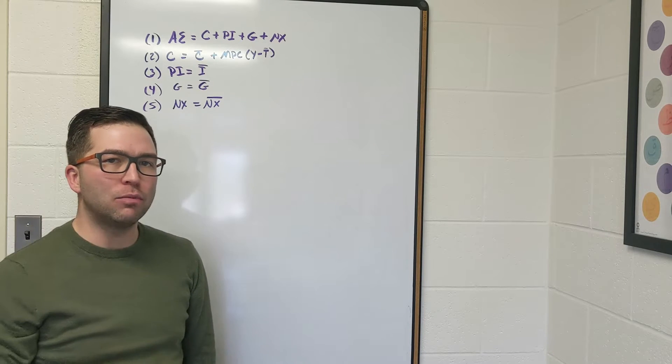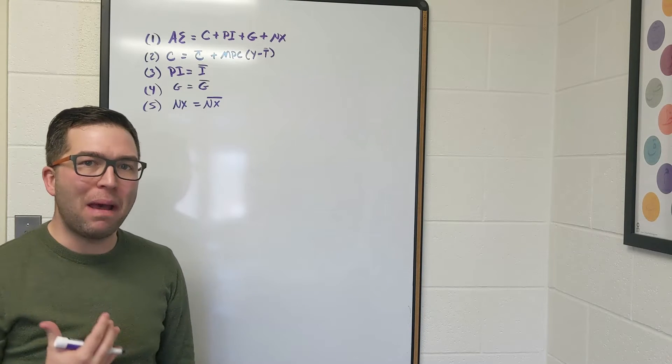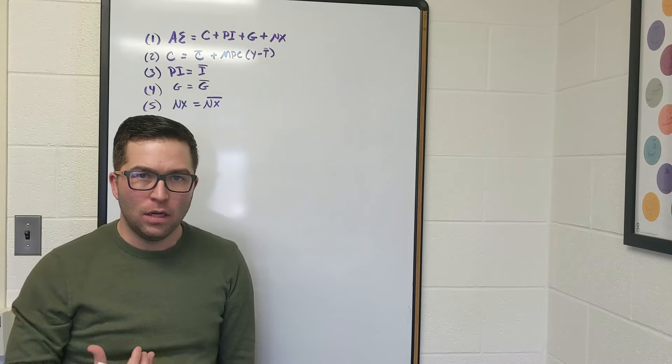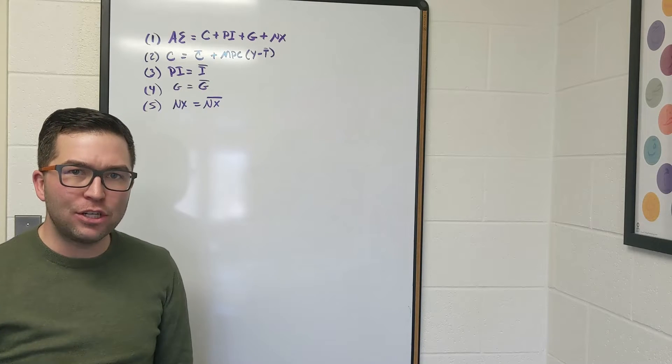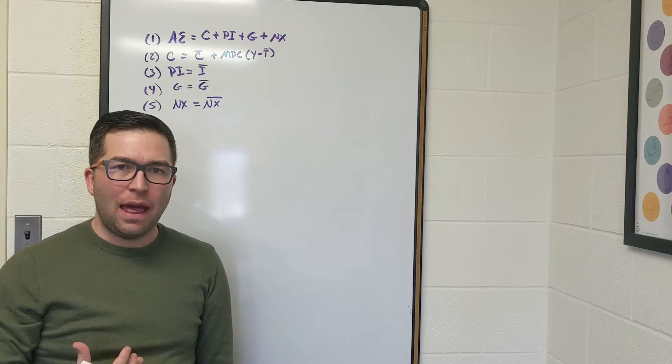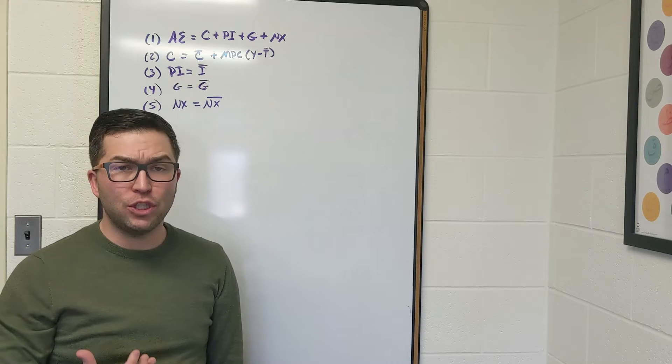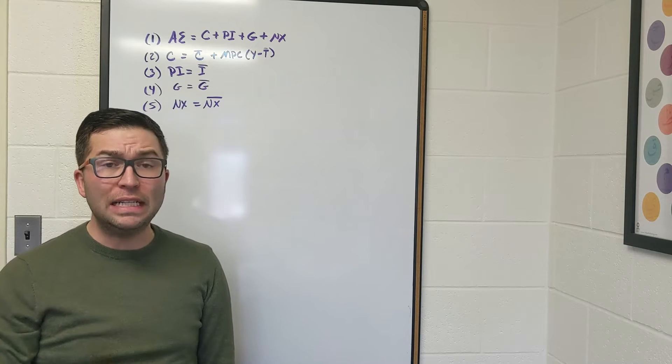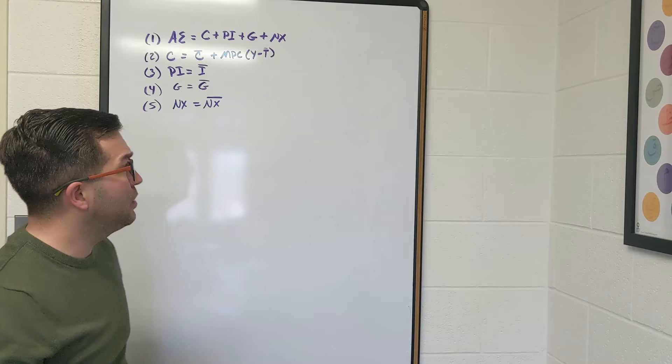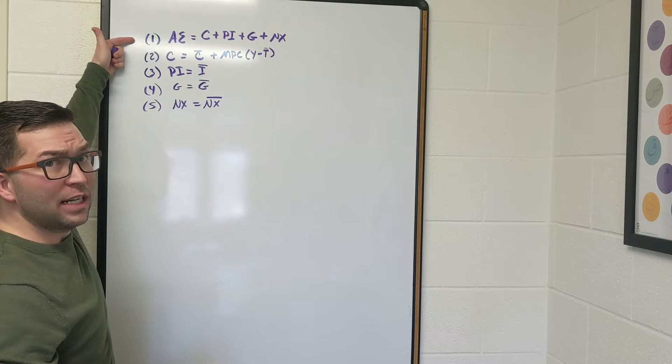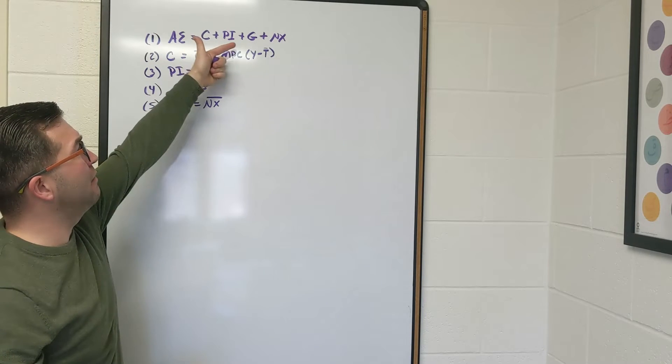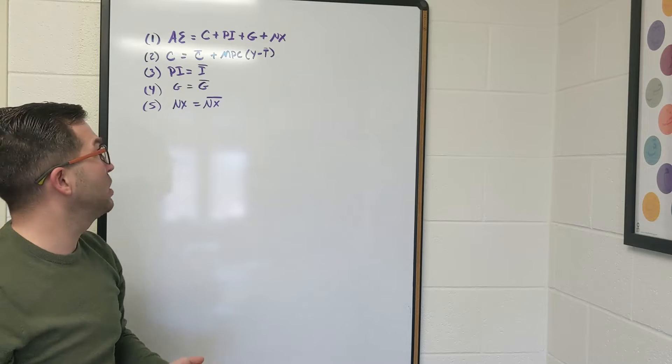Now we turn to the algebra aspect of this macroeconomic equilibrium. We're going to use the aggregate expenditure function we've talked about and then solve for the real GDP that puts this model into equilibrium. As you see up here, I have what aggregate expenditure is: consumption, planned investment, government purchases, and net exports.